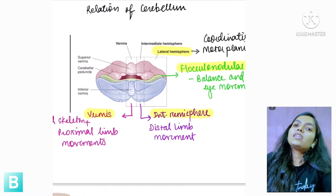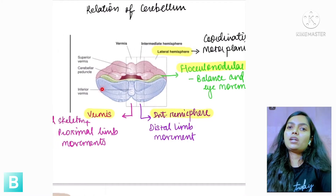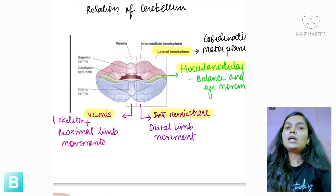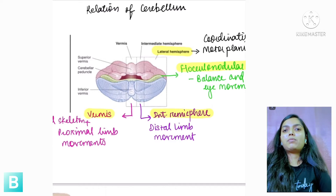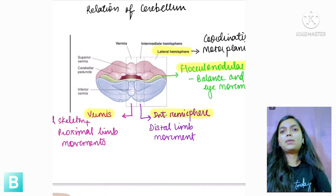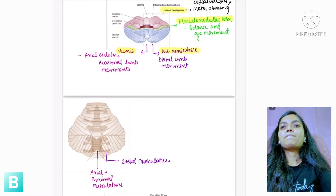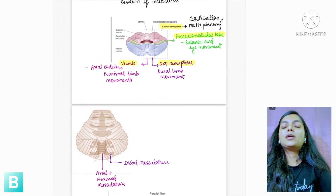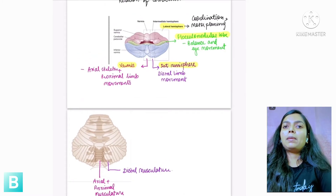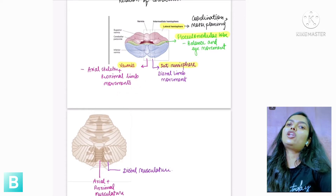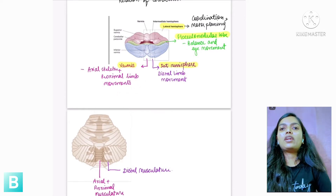There is another structure called peduncles. There are three peduncles — superior, middle, and inferior peduncles — whose significance will come in the later part of our discussion. To help remember which part of Cerebellum controls which movement, whether proximal, distal, or balance, a picture is provided.